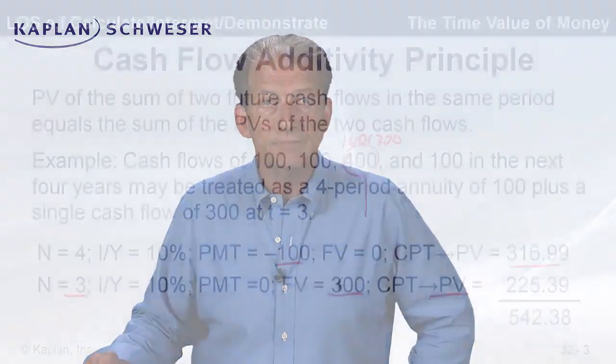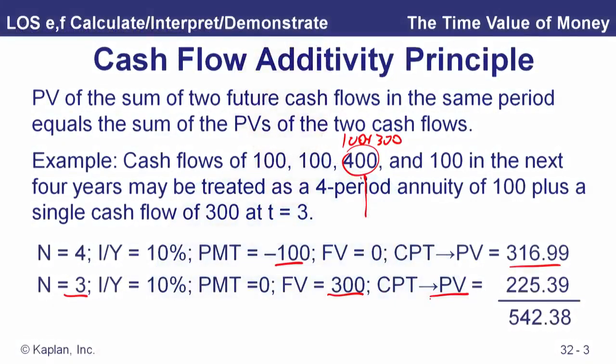We calculate the present value of the $100 annuity, then add the present value of the extra $300 at time three, which is $225.39. Adding the pieces together gives the present value of all four cash flows: $542.38. Just make sure to add the present values of all the various pieces you've broken the cash flows into.